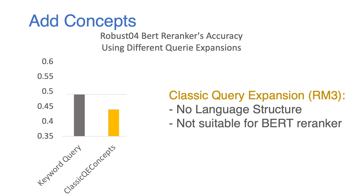We start by adding new concepts to the original keyword query. As shown in the diagram, the gray bar shows the performance — precision@10 — of a keyword query on Robust04 using a BERT re-ranker. The yellow bar uses a classic query expansion method, RM3, to add new words into the original query, and that new query is fed into the BERT re-ranker to rank documents. As can be seen, the classic QE concepts do not improve the original keyword queries — actually, it hurts the performance. This is because the added concepts are in discrete word format and do not have any structure of language, and they are not suitable for BERT re-rankers that are trained on natural language.